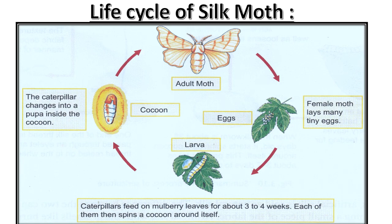Before looking at the life cycle of the silk moth in detail, let us first look at the diagrammatic representation. In this life cycle, four major steps are given, starting from the adult moth. The female moth lays many tiny eggs. Then comes the larva — caterpillars feed on mulberry leaves for about three to four weeks, and each of them then spins a cocoon around itself. After that, the caterpillar changes into a pupa inside the cocoon, and finally we can again get the adult moth.